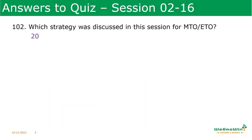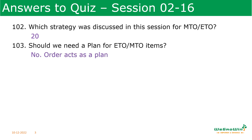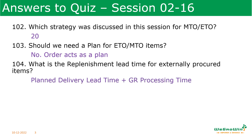Which strategy was discussed for MTO and ETO? There are many strategies, but we discussed strategy 20 for make to order and engineer to order. Should we need a plan for ETO or MTO items? No — in ETO or MTO, the order itself will act as a plan. What is the replenishment lead time for externally procured items? For externally procured items, it is the planned delivery lead time. For in-house production items, it is based on the work scheduling view time, in-house production time, or the replenishment lead time in MRP3. For purchase items, it is planned procurement time plus GR processing time.